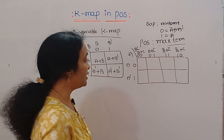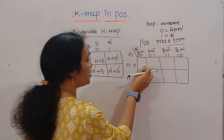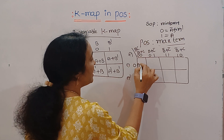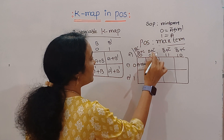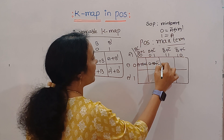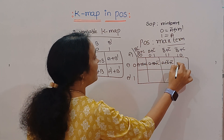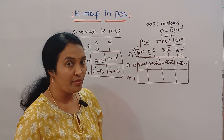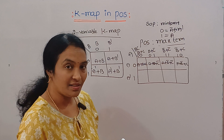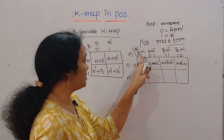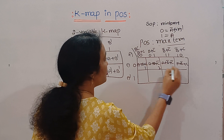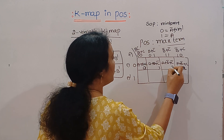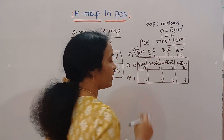So we represent the Maxterms as: M0 = A plus B plus C; M1 = A plus B plus C bar; M2 = A plus B bar plus C bar; M3 = A plus B bar plus C. Locations are as usual: 0, 1, 2, 3, 4, 5, 6, 7.